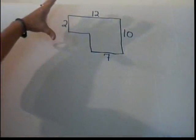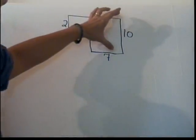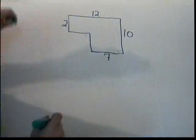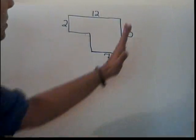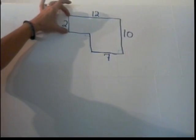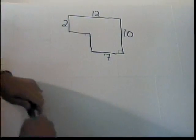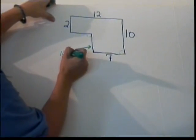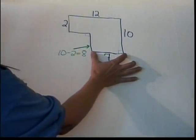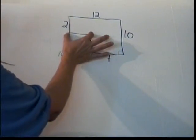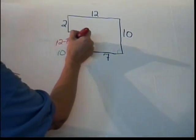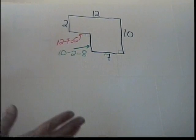The shape appears to be rectangular, with right angles at its corners. Since opposite sides of a rectangle are equal, the side alongside the '2' measurement must account for the rest of the total length of 10, making it 10 minus 2, or length 8. Similarly, to reach the total width of 12, the other unknown side must be 12 minus 7, or length 5.